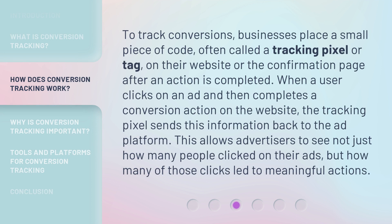To track conversions, businesses place a small piece of code, often called a tracking pixel or tag, on their website or the confirmation page after an action is completed. When a user clicks on an ad and then completes a conversion action on the website, the tracking pixel sends this information back to the ad platform. This allows advertisers to see not just how many people clicked on their ads, but how many of those clicks led to meaningful actions.